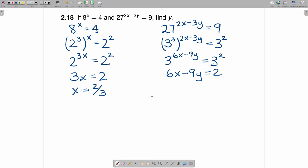This seems like the right time to plug the 2 thirds in here for x. You will have 6 multiplied by 2 thirds minus 9y is equal to 2.